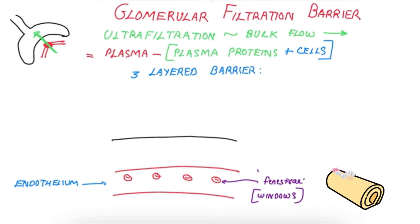This is the basement membrane, which is also negatively charged and made of collagen and proteoglycan—made of connective tissue. And it is like a gel.